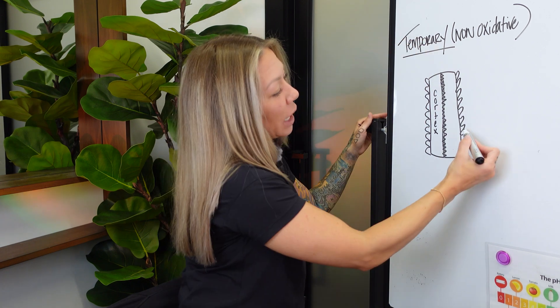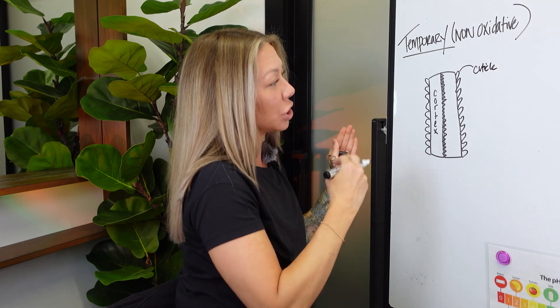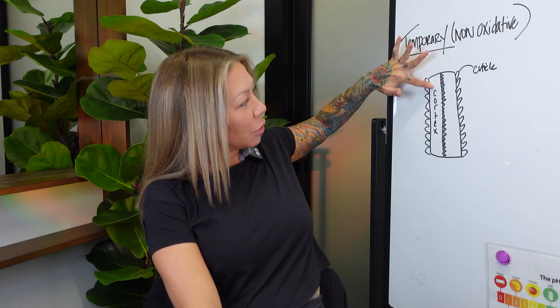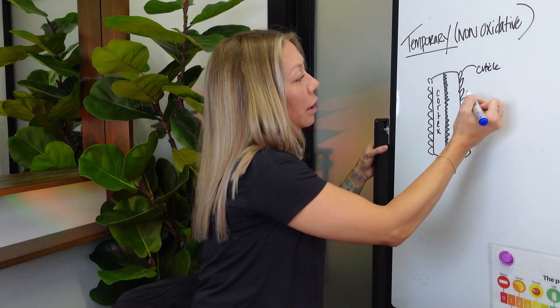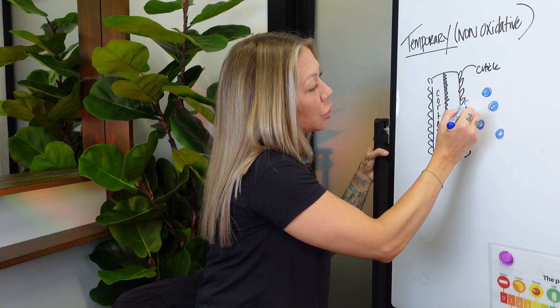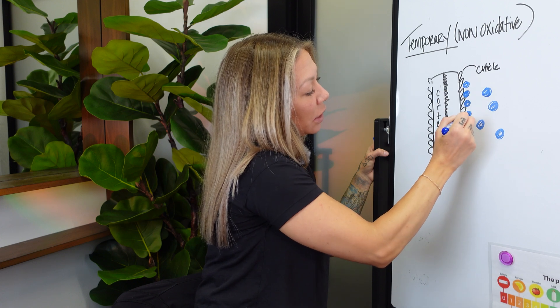The next layer is the cortex. The outer layer is the cuticle and remember they look like shingles or fish scales — it kind of overlaps. For example, permanent hair color slips through the shingle, the little crack, and lives in the cortex. But temporary hair color has these really large color molecules. They're too big to fit inside the crack, so they just sit on the outside and don't make their way inside to do any chemical change.